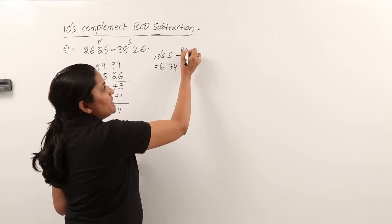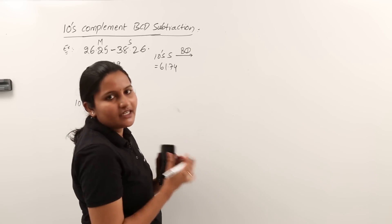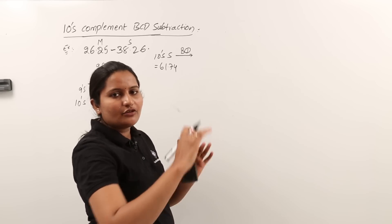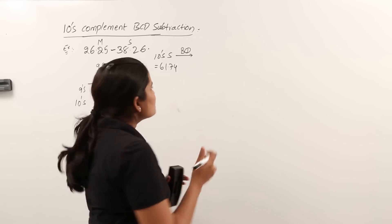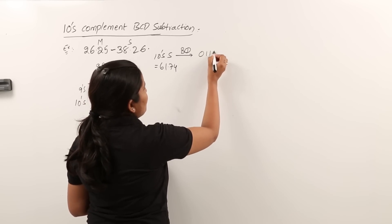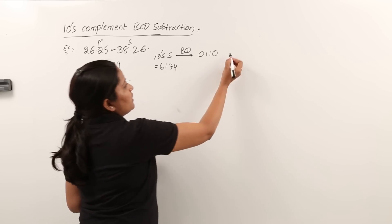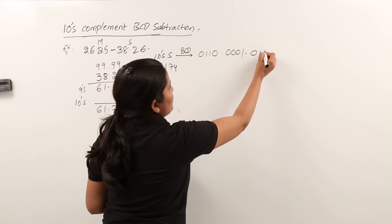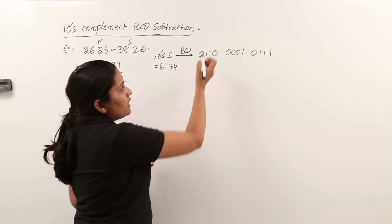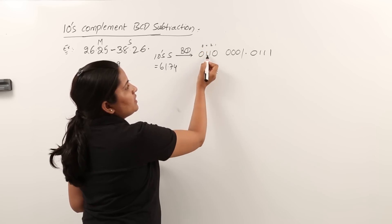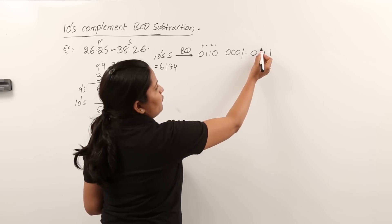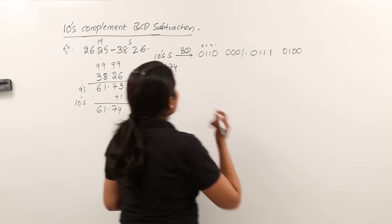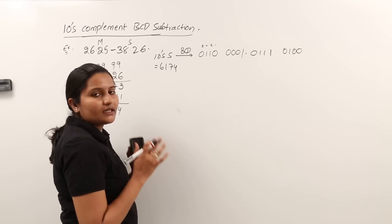For BCD subtraction, we consider 61.74 in BCD code, meaning every digit is taken as 4 binary digits. For 6: 0110. For 1: 0001. For 7: 0111. For 4: 0100. If you have any doubt, take the reference of the 8-4-2-1 BCD table. So we have now represented 61.74 in BCD code.